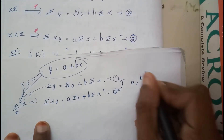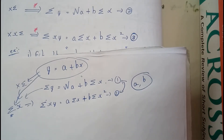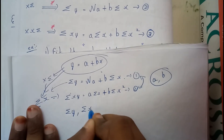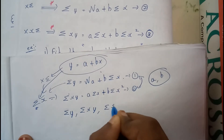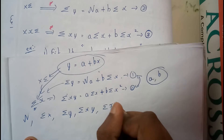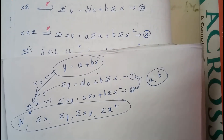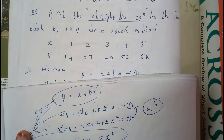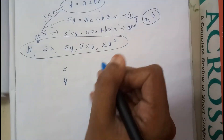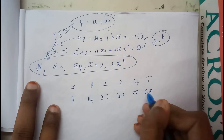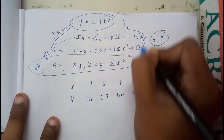So now I hope everyone has a crystal clear idea on this. You need to find the unknowns: sigma y, sigma xy, sigma x squared, sigma x, n, and so on. These are all the unknowns you need to solve to get the straight line equation. Now let us take a small example — fit the straight line equation for the following data using the least square method. The given values of x are 1, 2, 3, 4, 5 and y are 14, 27, 40, 55, 68.